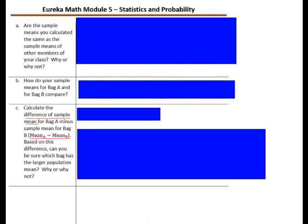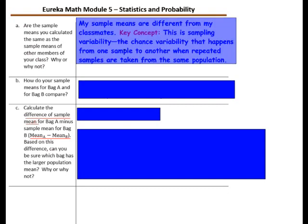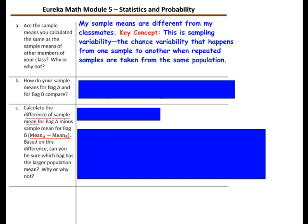Are the sample means you calculated the same as the sample means of other members of your class? Why or why not? If your dot plots are different and your samples are different, the means will be different too. This is a key concept: this is sampling variability — the chance variability that happens from one sample to another when repeated samples are taken from the same population. Remember, when you're drawing a number out of a bag, your neighbor may draw a different number.